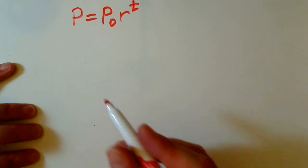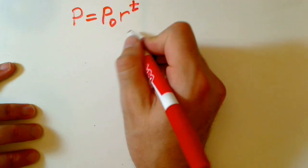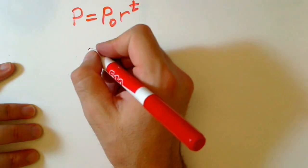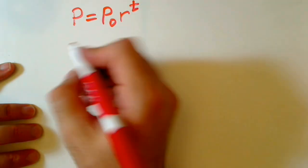And we know that after 10 minutes, which is t, our population was 1000. How can we write it?